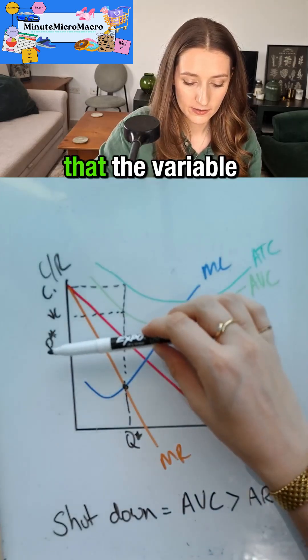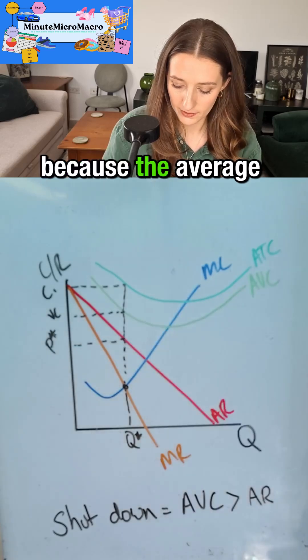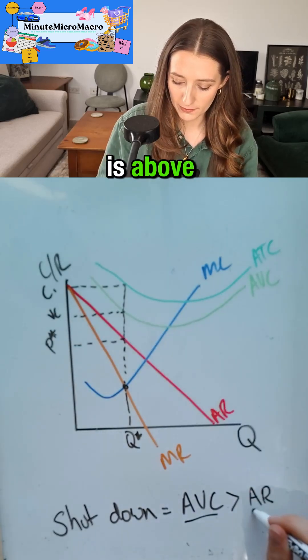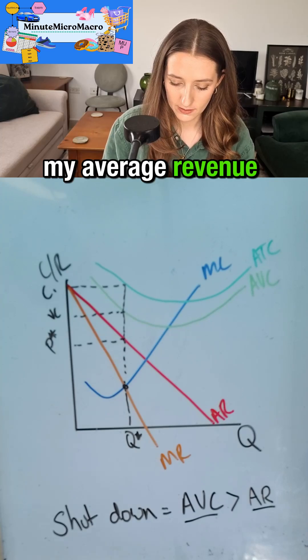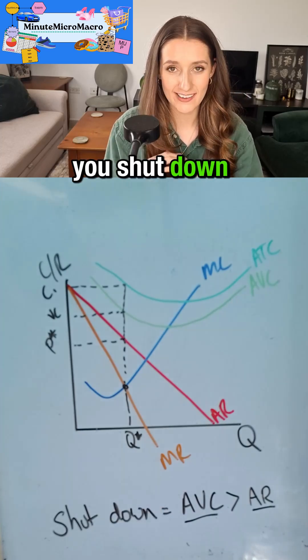You can see that the variable cost is greater than the price because the average variable cost curve is above my average revenue at the Q star. This is when you shut down immediately.